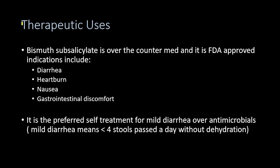Bismuth subsalicylate is an over-the-counter medication, FDA approved for treatment of diarrhea, heartburn, nausea, and gastrointestinal discomfort. It is the preferred self-treatment for mild diarrhea — defined as fewer than four stools per day without dehydration — and is preferred over antimicrobials.